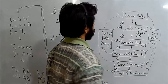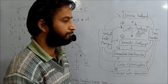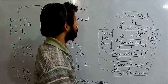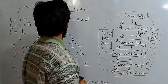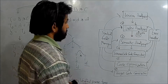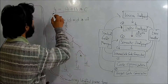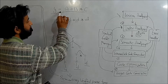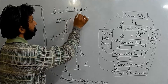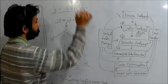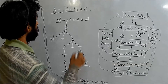Now I will discuss all six phases with the help of one example, a piece of code. Let us take the piece of code: y = a + b * c.